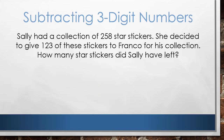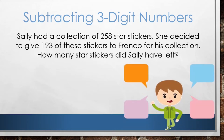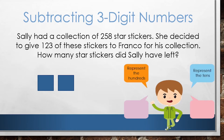Thinking back to place value representations, how can we represent this statement? First, we should represent the total number of stickers Sally has, which is 258. We can start by representing the hundreds with two flats. Then we can represent the tens with five rods. Finally, we can represent the ones with eight units.